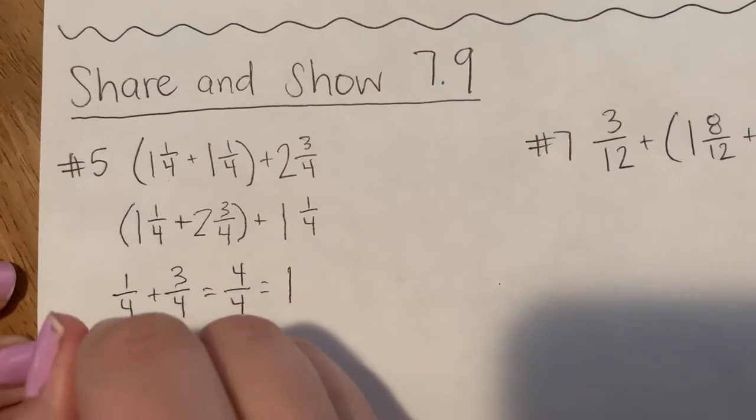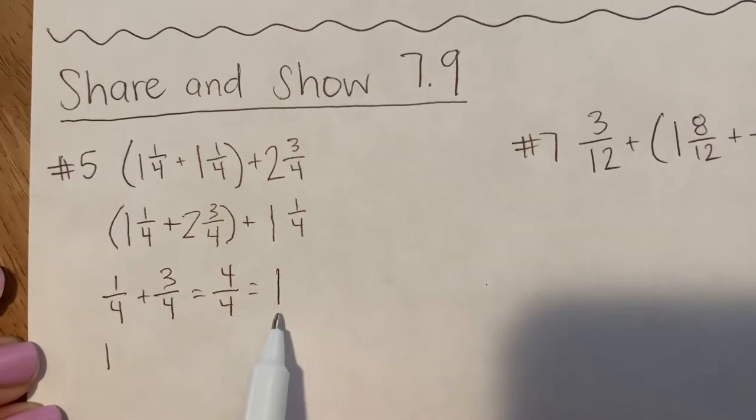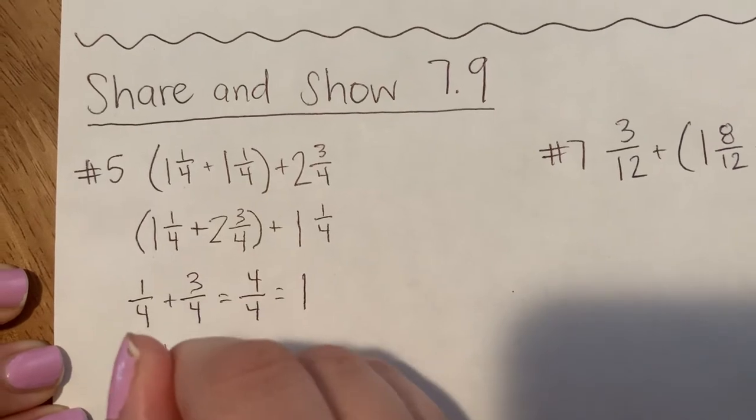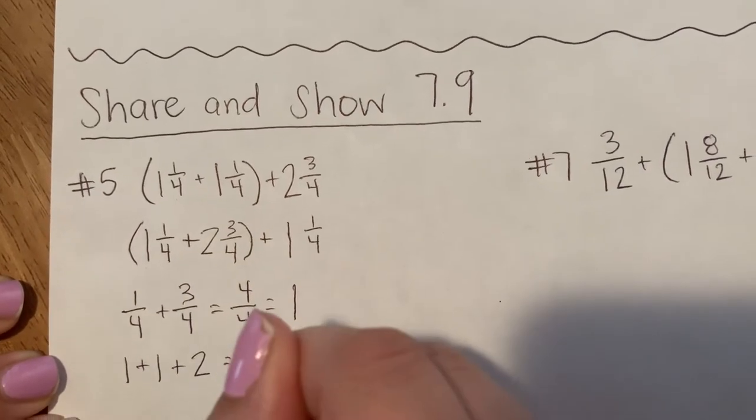And now I add these whole numbers together. I'll put one down first just so I don't forget it, and then it looks like I had the whole number 1 and the whole number 2. So 1 plus 1 plus 2, that equals 4.